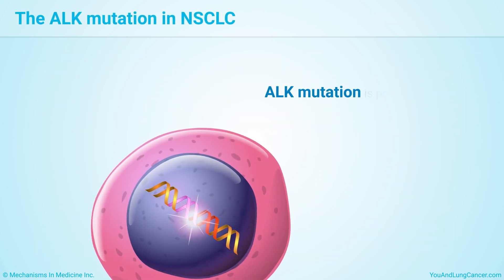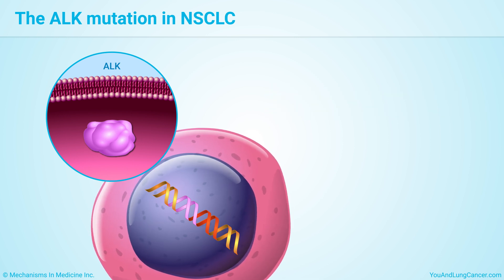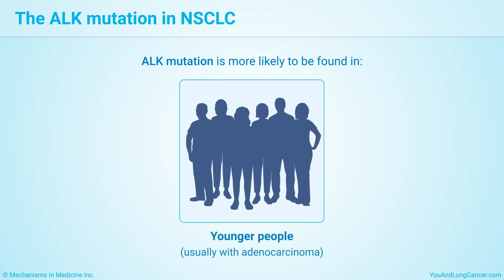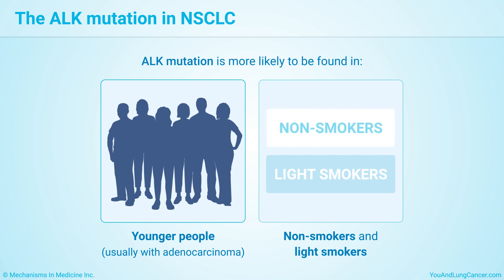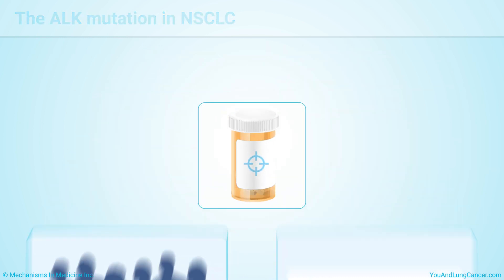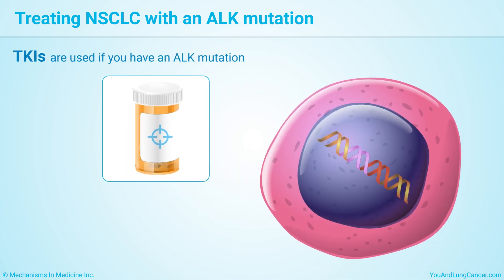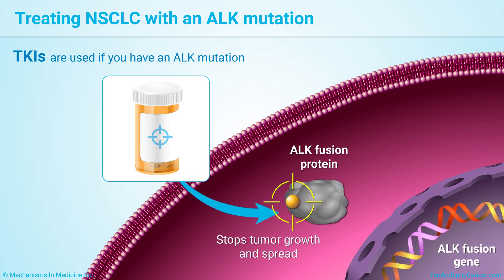The ALK mutation is present in about 5% of people with non-small cell lung cancer. It is more likely to be found in younger people, usually with adenocarcinoma, and tends to occur in non-smokers and light smokers. Drugs called tyrosine kinase inhibitors, or TKIs, are used if you have an ALK mutation. TKIs work by blocking proteins and preventing cancer cells from growing.